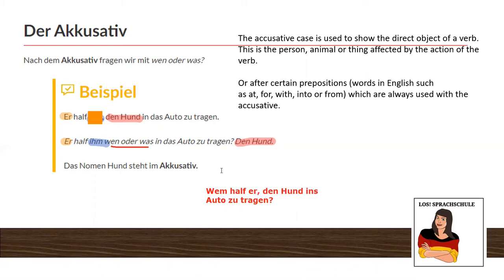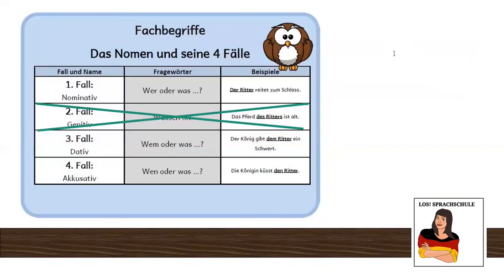So I repeat. Erster Fall — Nominativ. 'Wer oder was?' Here we have it underlined. 'Der Ritter reitet zum Schloss' — the knight rides to the castle. 'Der Ritter' is the person doing the action in the sentence. He is the big topic, not the castle.